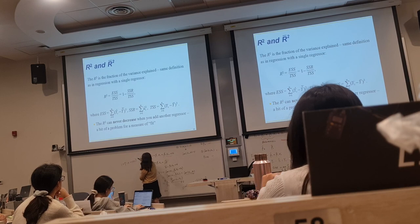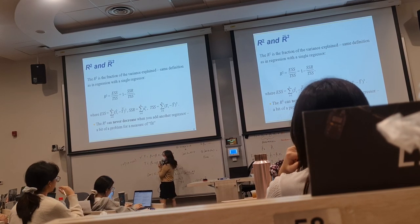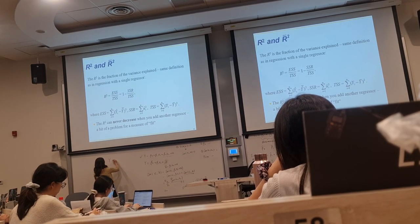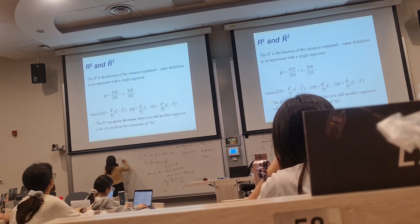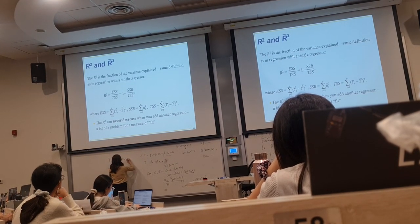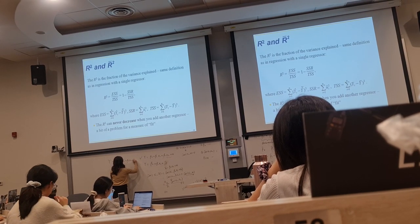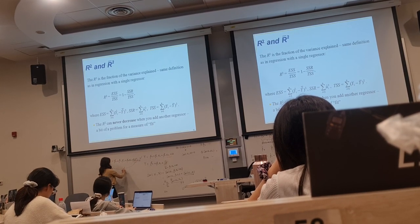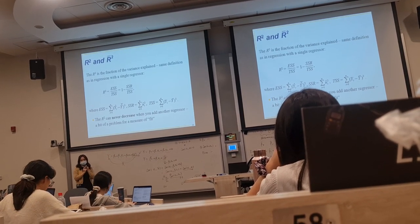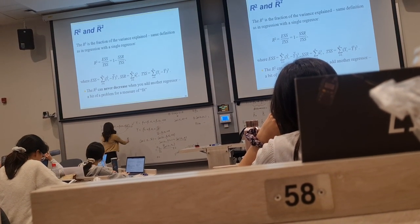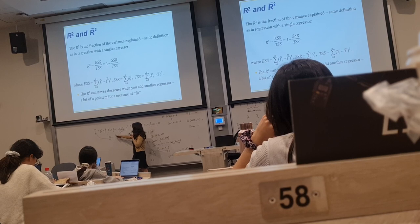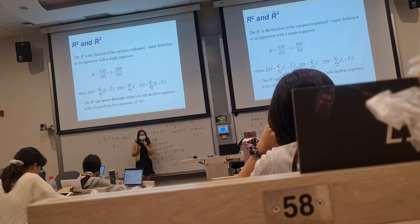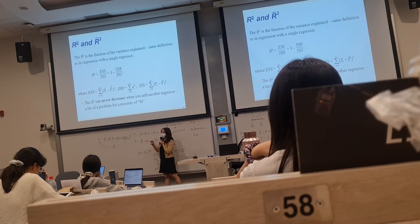So this is a good model, including x1 and x2. I add an x3, but this x3 cannot explain y. Even though x3 is useless, we still have x1 and x2. x1 and x2 are still playing their role in explaining y. So R squared will not decrease.